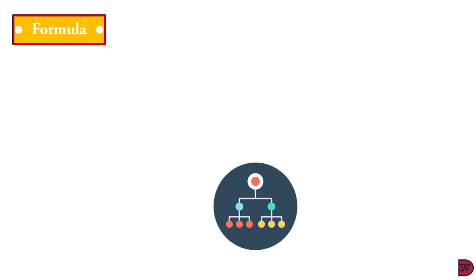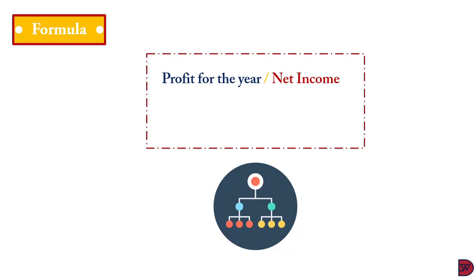There are two main types of dividend: one paid to preference shareholders and one paid to ordinary or common shareholders. Preference shareholders represent a combination of debt and equity, and their structure requires that they be paid periodic amounts taking precedence over common shareholders. In certain situations, their dividend must be paid whether profit is generated or not. To analyze the dividend cover for preference shareholders, we take the profit for the year divided by the preference dividend quoted.